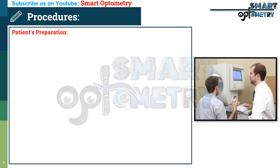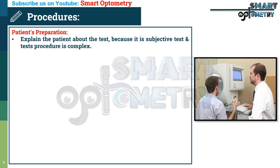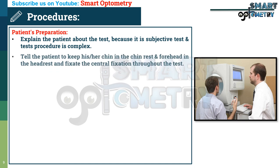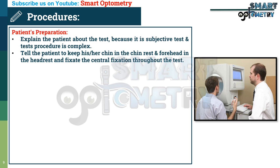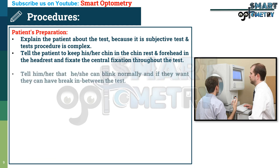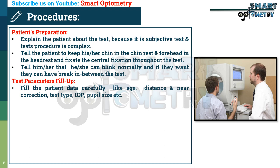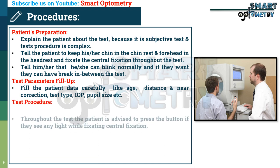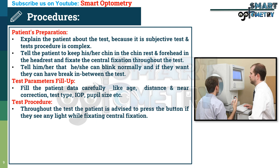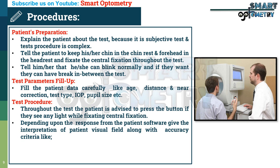Now the procedure of automated perimetry. Patient preparation: explain the procedure to the patient because it is a subjective test and the procedure is complex. Tell the patient to keep their chin in the chin rest and forehead in the head rest and fixate on the central fixation throughout the test. Tell them they can blink normally and may take a break during the test. Fill the patient's data carefully — age, distance and near correction, test type, pupil size, etc. Throughout the test, the patient is advised to press the button if they see any light while maintaining central fixation. Depending on the patient's responses, the software gives interpretation of the visual field along with accuracy criteria like false positives, false negatives, and fixation losses.